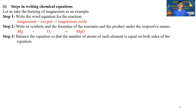Now, is the equation balanced? The equation may not be balanced if the number of atoms of each element is not the same on both sides. The equation needs to be balanced by adjusting coefficients so that the number of atoms of each element is equal on both sides.